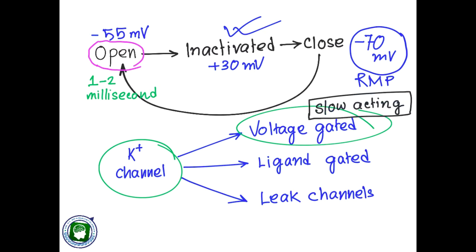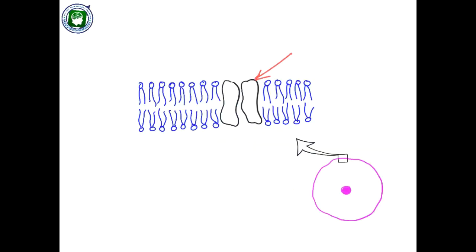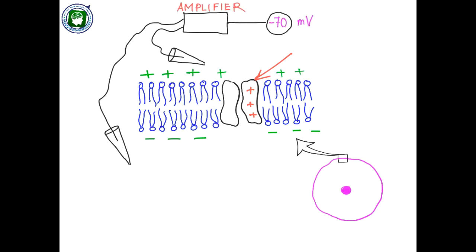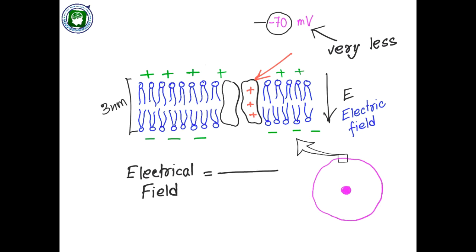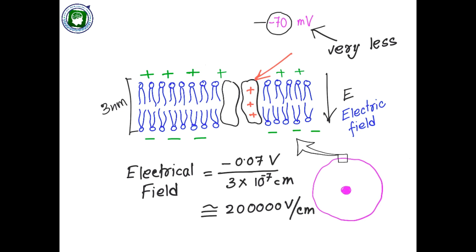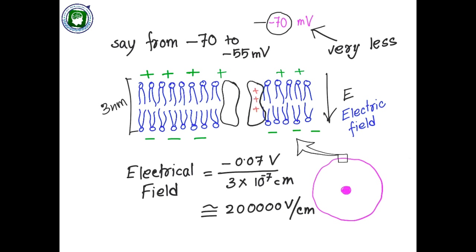We will see these channels in the context of action potential. Any channel with charge in it feels a great amount of electric force even when the cell is at rest. The electric potential is just 70 millivolt, but let's see how much electric field this potential difference can generate across the cell membrane, which generally has a thickness of around just 3 nanometers. The electrical field strength can be calculated as 0.07 volt divided by 3 × 10⁻⁷ centimeters, which comes to around 2 lakh volts per centimeter — a very impressive number for a tiny charged protein in the membrane. So any fluctuation in membrane potential can cause these charged proteins to swing vigorously at the molecular level.